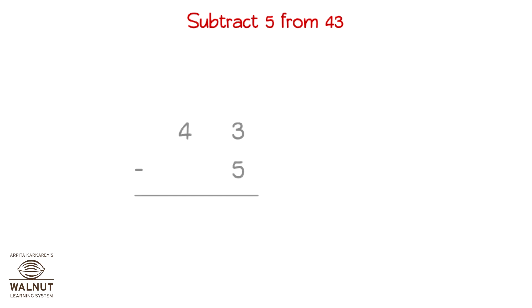Subtract 5 from 43. We write the numbers one below the other to subtract. We write the place values. Now we look at the numbers in the units place. We cannot do 3 minus 5, so we need to borrow.